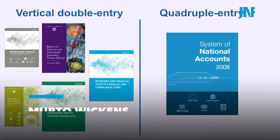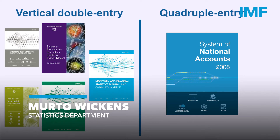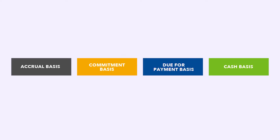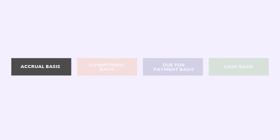In all macroeconomic statistics except for the System of National Accounts, we use vertical double entry bookkeeping. In the SNA, we use quadruple entry bookkeeping, which combines vertical and horizontal double entry bookkeeping.